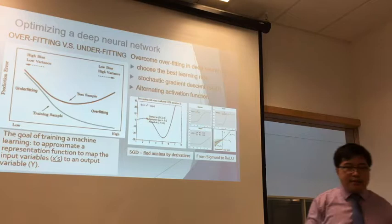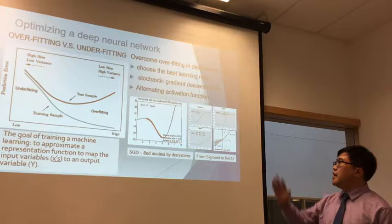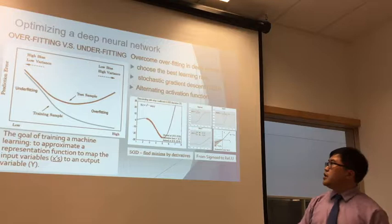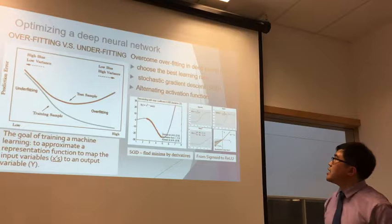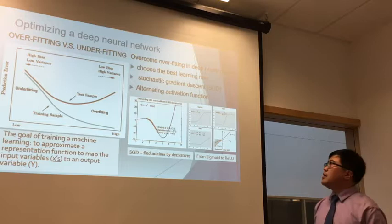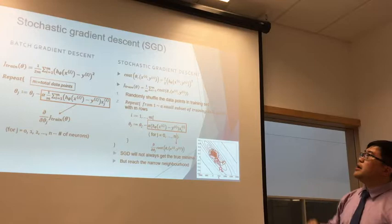Activation function choice depends on data type. For numeric data, we can choose sigmoid. For image data, we can choose ReLU. For recurrent neural networks for voice recognition or NLP, we can choose hyperbolic tangent. In our solution, we mainly use ReLU because we are processing image data. Stochastic gradient descent produces a more zigzag pathway to the minimum compared to the smooth curve of batch gradient descent, but by choosing the appropriate learning rate and controlling gradient vanishing and explosion, we can still reach the true minimum at much lower computational cost.